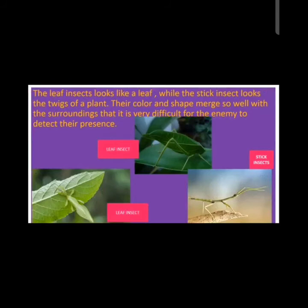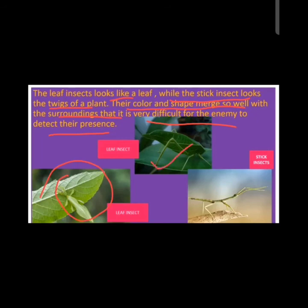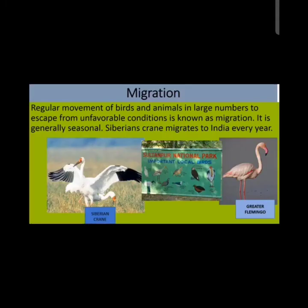The leaf insect looks like a leaf, while the stick insect looks like the twigs of a plant. Their color and shape merge so well with the surroundings that it is very difficult for an enemy to detect their presence — we cannot differentiate between the leaf and the insect because they look alike. This process is known as camouflage.